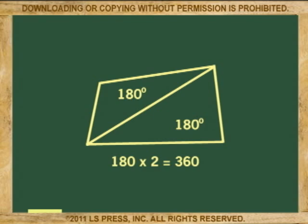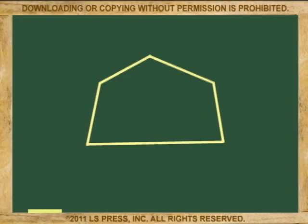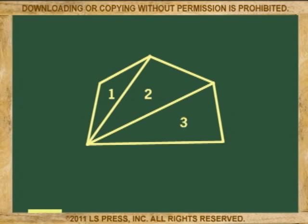May we apply the same logic to other polygons? Sure. How many triangles in a five-sided figure? Without crossing lines, of course. One, two, three. Three times 180 equals 540. So the sum of all the angles of a five-sided figure is 540 degrees.